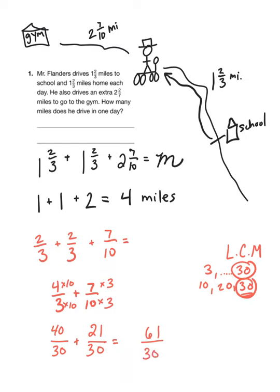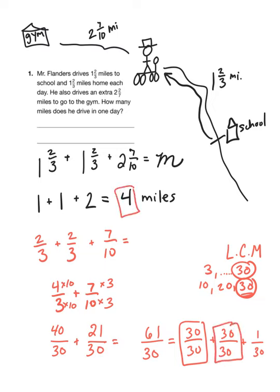And then when I add those two amounts, I have sixty-one over thirty, which I need to convert to a mixed number. So sixty-one over thirty is equal to thirty over thirty, or one mile, plus one-thirtieth of a mile. So this is one whole and two wholes to add to our four. That gets us up to six miles and one-thirtieth of a mile. So that's how far he is driving every day: six and one-thirtieth of a mile, or just barely over six miles.